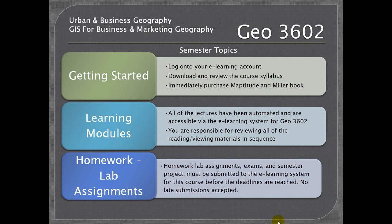Getting started: log on to your e-learning account. Download and review the course syllabus for Geography 3602. And also immediately purchase Maptitude and Miller's Book. You can buy Miller's Book from Amazon.com or any other online retailer.